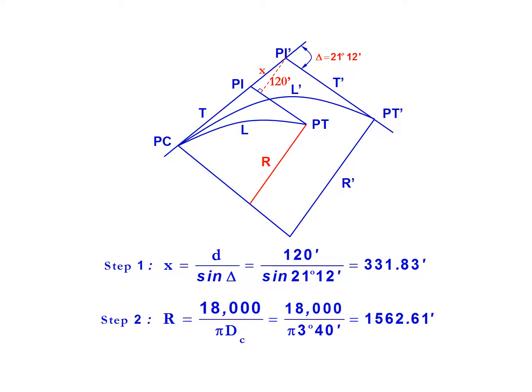Our next step is to determine the radius: 18,000 over pi times the degree of curvature. So the radius for the existing curve is 18,000 divided by pi times 3 degrees 40 minutes, which equals 1562.61 feet.